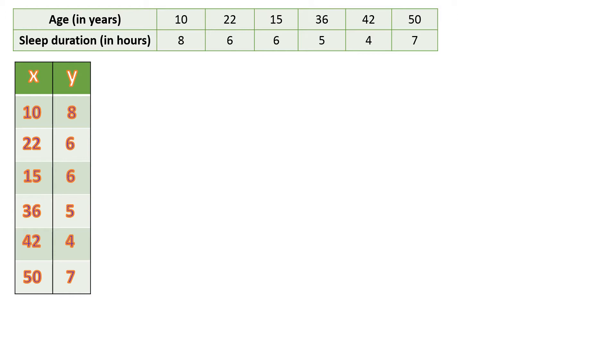The next column you need is the XY or the product of X and Y. That means we're going to multiply the X and Y variables. 10 times 8 is 80, 22 times 6 is 132, 15 times 6 is 90, 36 times 5 is 180, 42 times 4 is 168, and 50 times 7 is 350.